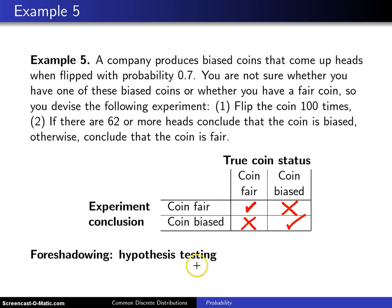Now in hypothesis testing, we call one of these, namely this one right here, a Type I error. And this one right here, we call a Type II error. And we're interested in the probability of being in each of these four boxes here.